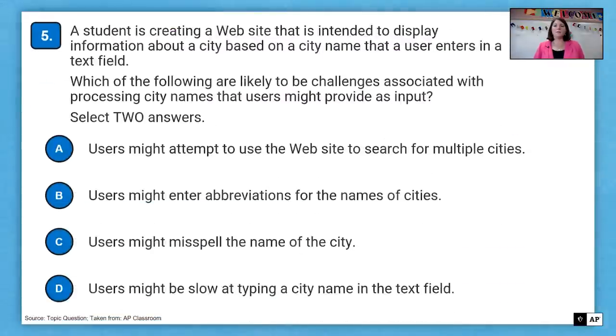All right, question number five. A student is creating a website that is intended to display information about a city based on a city name that the user enters in a text field. Which of the following are likely to be challenges associated with processing city names that users might provide as input? We need to select two answers here. So let's take a look. Again, the key is the city name that the user enters as a text field. That means the user could type in anything for the city.